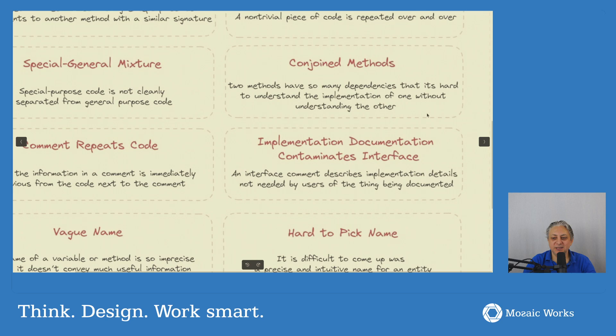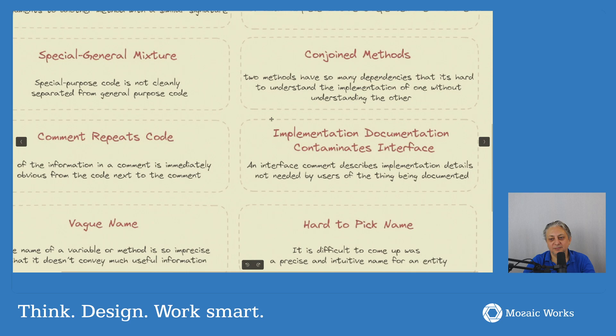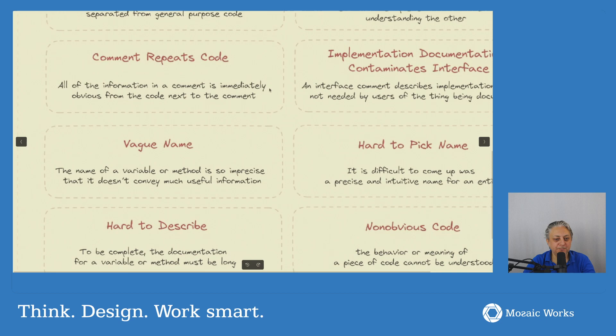Conjoint methods. Two methods have so many dependencies that it's hard to understand the implementation of one without understanding the other. I haven't seen this recently, but it's basically coupling. Very strong coupling between two methods. Basically when you change one, you need to change the other. The way to fix this is to refactor them into one method or a different separation of concerns. Restructure the code so that the concerns are otherwise organized.